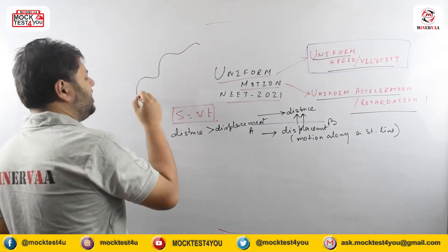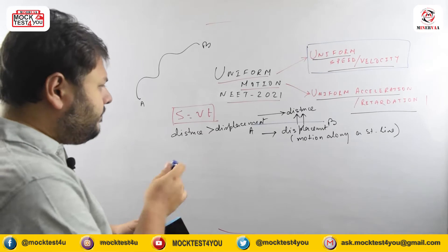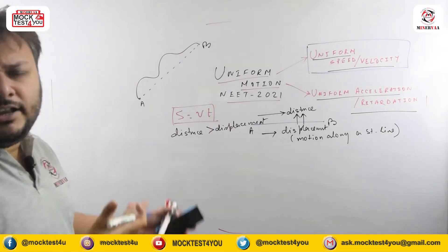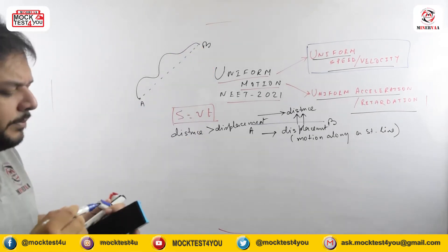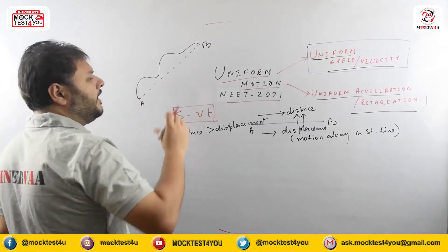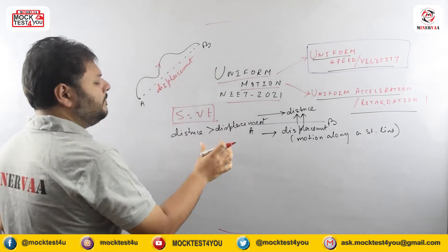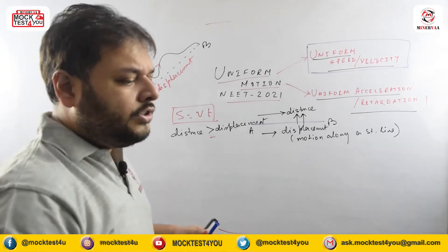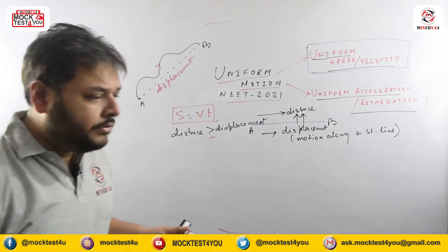For any curvilinear motion — suppose a particle moves along a curve from A to B — the total path traveled is the distance, and the shortest linear distance between A and B (shown as the blue dotted line) is the displacement. Displacement is most of the time less than or equal to distance; it equals distance only when the motion is along a straight line.